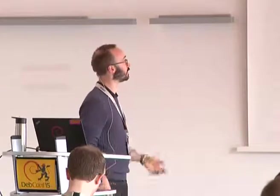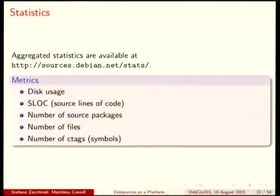These are the statistics specific to a given package. Then you have statistics aggregated across all content of Debsources. You can go to sources.debian.net/stats, and there you will find metrics like how much disk space it takes to have all the source code of Debian on your machine, and how many lines of code are in current SID.